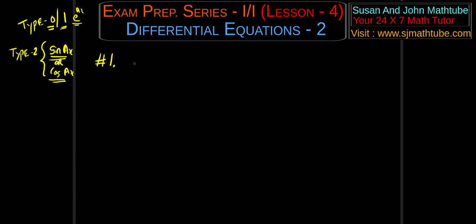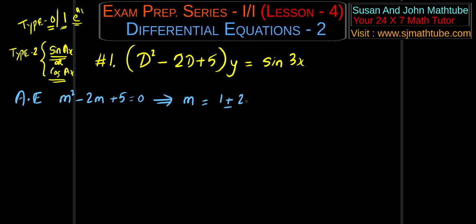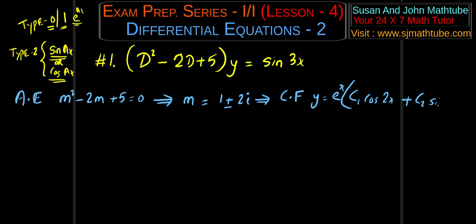Let's work out one problem and learn the technique. Solve the differential equation: D squared minus 2D plus 5 of y equals sine 3x. First, the auxiliary equation: m squared minus 2m plus 5 equals 0. Using a calculator, m equals 1 plus or minus 2i. That implies the complementary function is y equals e to the power x times (c1 cos 2x plus c2 sine 2x).